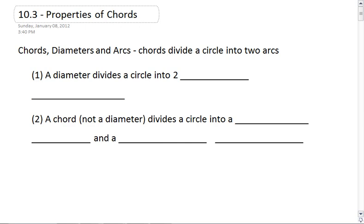Chords, diameters, and arcs. We know that chords divide the circle into two arcs. A diameter is going to divide the circle into two semicircles because a diameter cuts our circle perfectly in half, giving us those two semicircles.